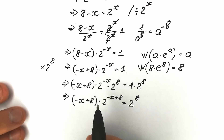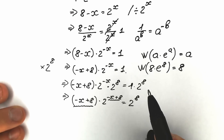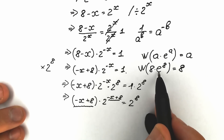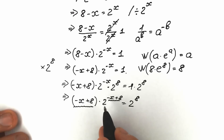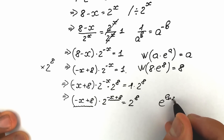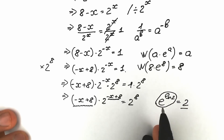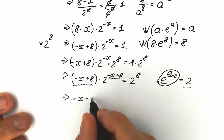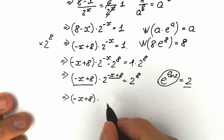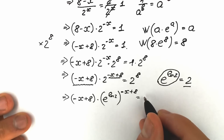If you look closely, a lot of students make the common mistake of applying the Lambert W function directly. But for applying Lambert W function, we need to have e. In our case, we have 2, so this is a completely different expression. We need to create e. Really easy — instead of 2, let's write e to the power natural log 2, since this equals 2. So instead of 2 to the power (minus x plus 8), we write e to the power (natural log 2) raised to the power (minus x plus 8). We get minus x plus 8 equal to 2 to the power 8.